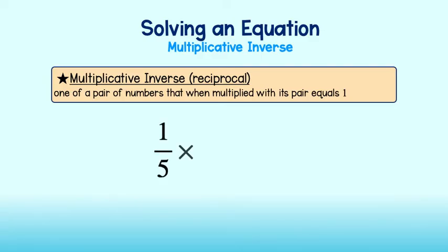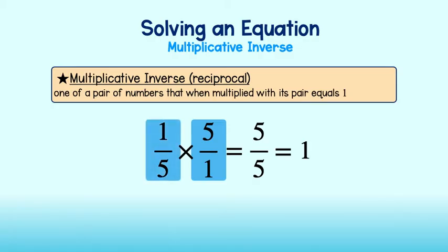For instance, 1 fifth times 5 over 1 equals 5 over 5, or 1. We can say that 5 is the multiplicative inverse, or reciprocal of 1 fifth. Remember that as we jump into the next example.